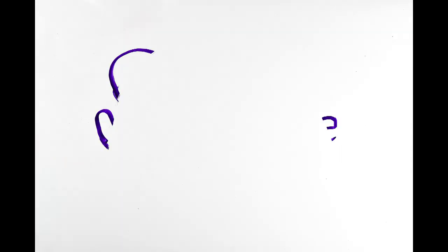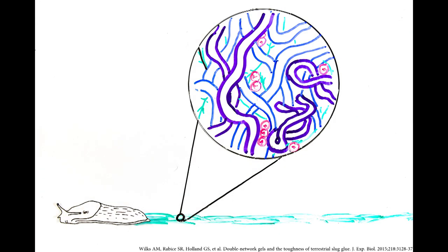What gives slug slime these properties? The answer lies in its structure. Zooming closer reveals that slime is a tangle of proteoglycans, proteins, and ions.